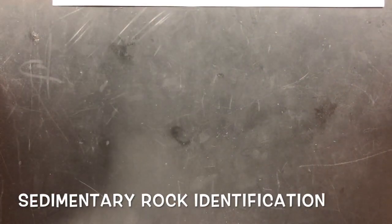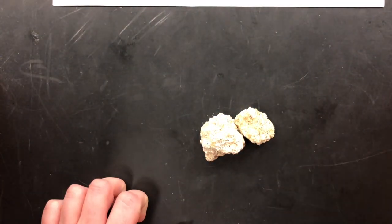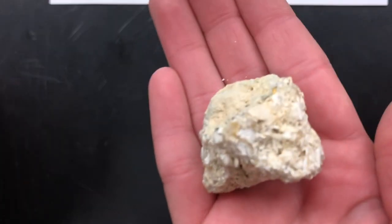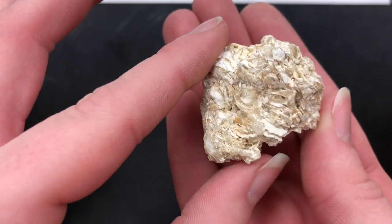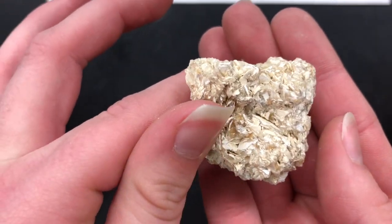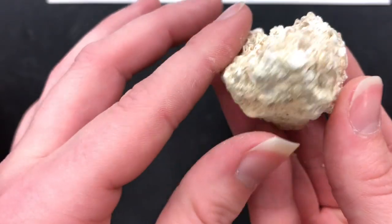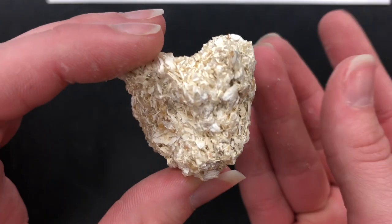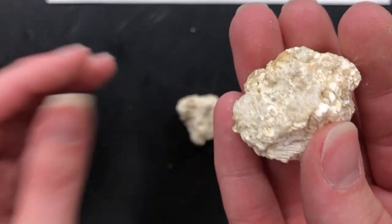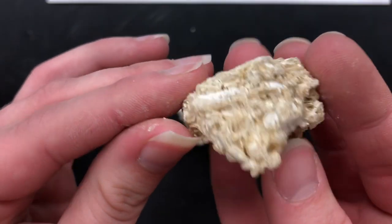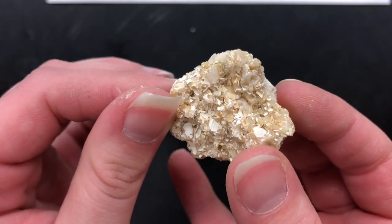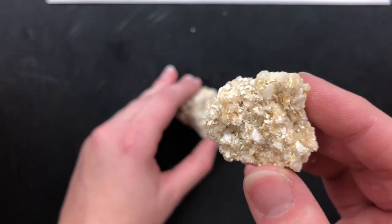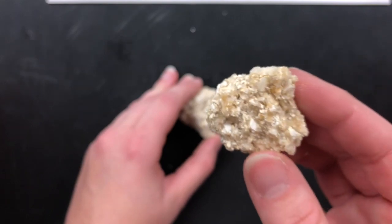First, let's look at fossils. These two little samples show little shells that have been cemented together. If I see little shell fragments cemented together, I know it's a sedimentary rock — you can even see material coming off in my hand. That is a sedimentary rock because I see fossils or shells cemented together.